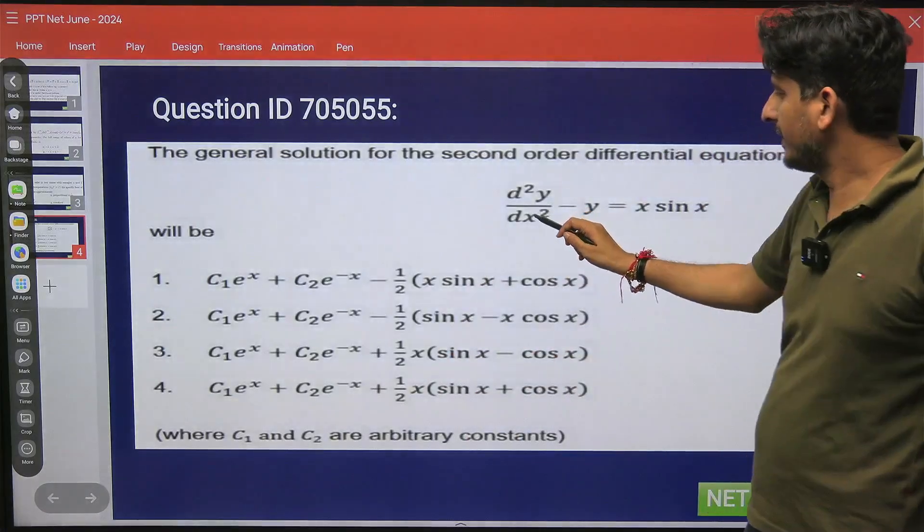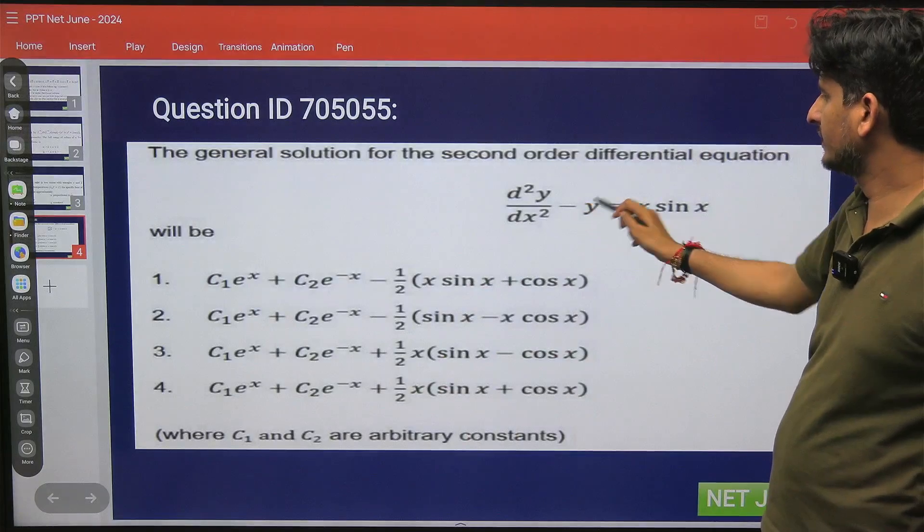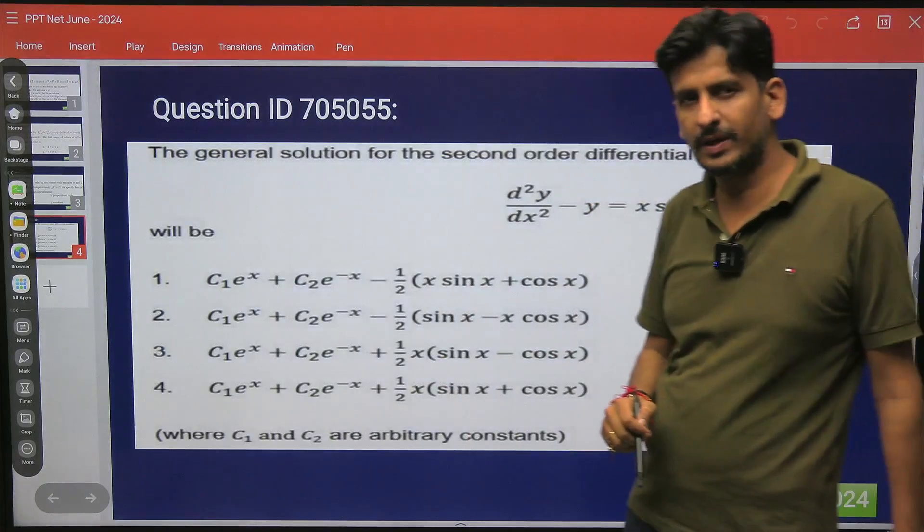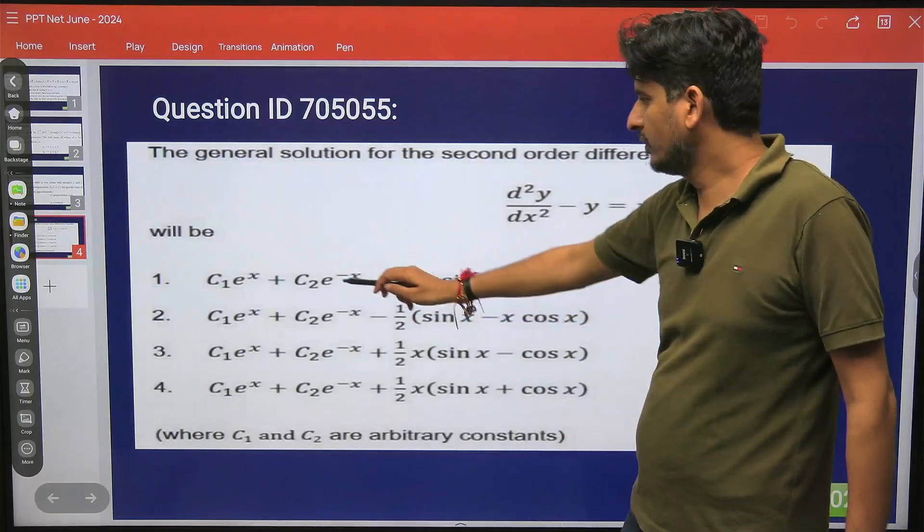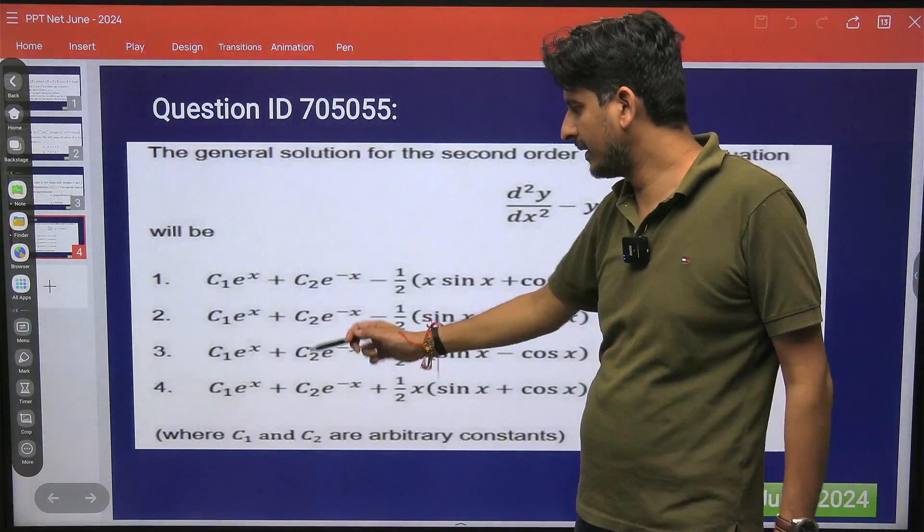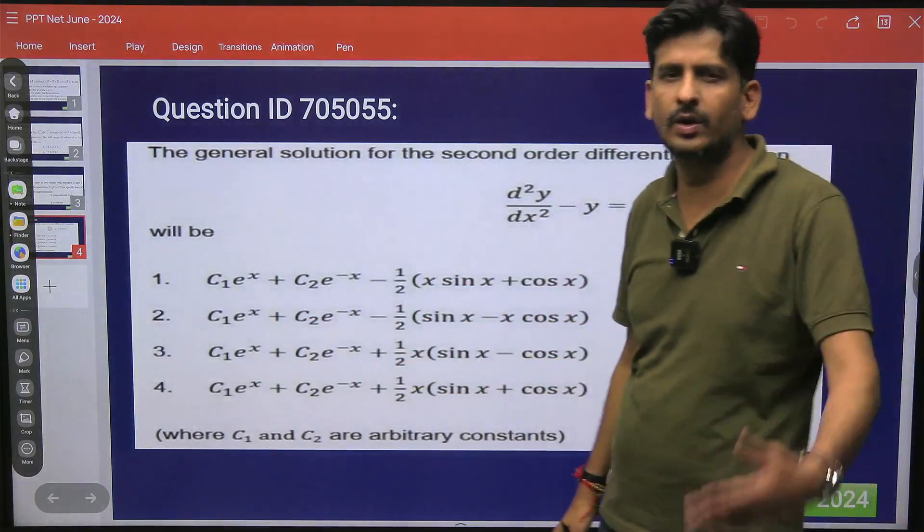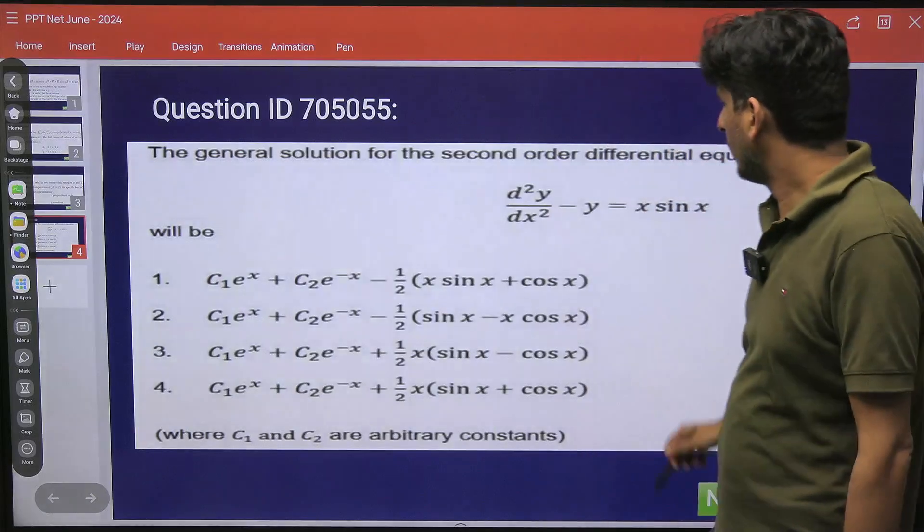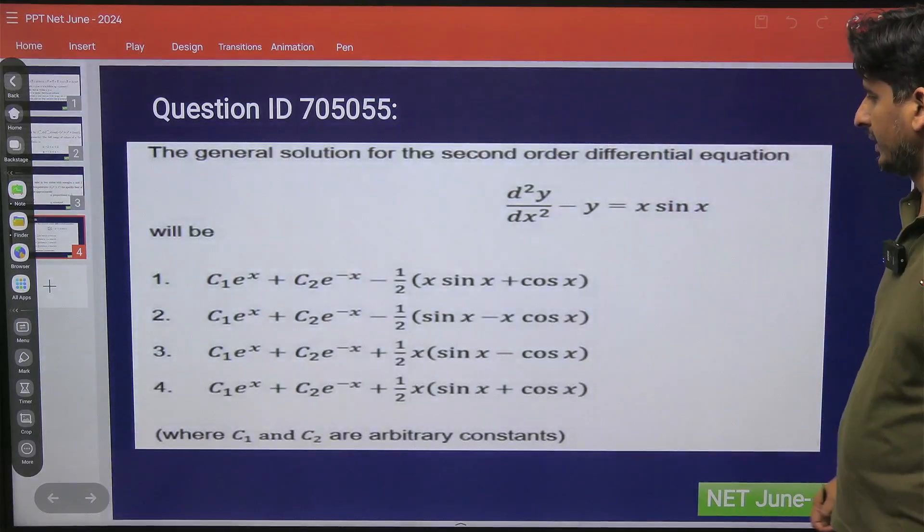But the complementary function d² - 1 = 0 will give you 1 and -1, and you can see c₁e^x + c₂e^(-x) is the complementary function in all four options. So you don't need to calculate it - only we have to calculate the particular integral.